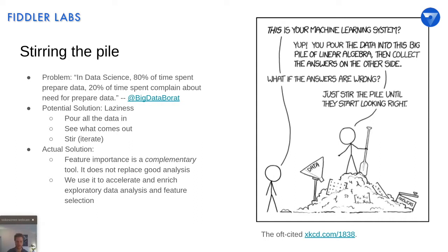Laziness and this funnel pile of linear algebra is actually a solution to our first problem. It's not necessarily correct, but if we just pour all our data into pre-existing tools that people have already worked out the math for, and then we see what comes out, we can then stir it, iterate more effectively than perhaps if we took all the time to go about our data from first principles at the beginning. This leaves us the actual solution: keeping all of our good analysis approaches and exploratory data analysis, but accelerating and enriching it by throwing things into a few algorithms here and there and looking at results in a more fast-paced, iterative manner.